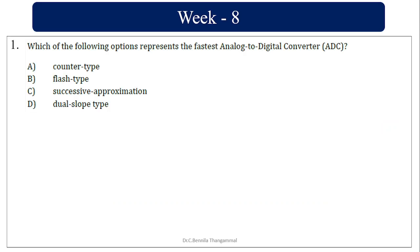Which of the following options represents the fastest analog to digital converter? We have counter type, flash type, successive approximation, and dual slope. Flash type is going to be the fastest ADC.